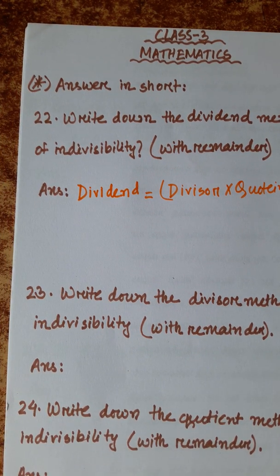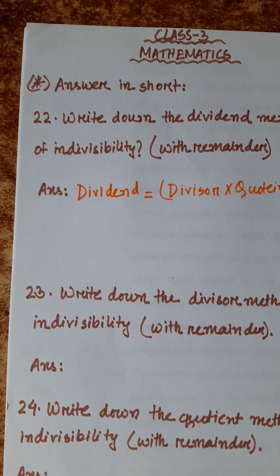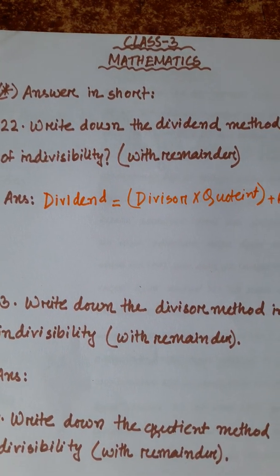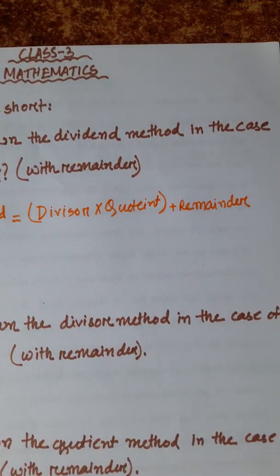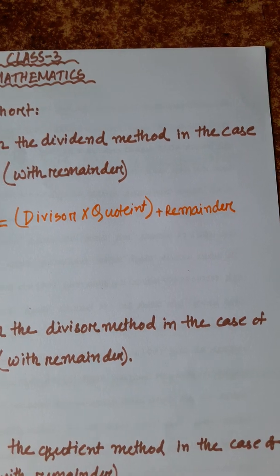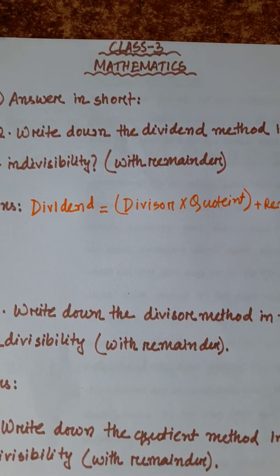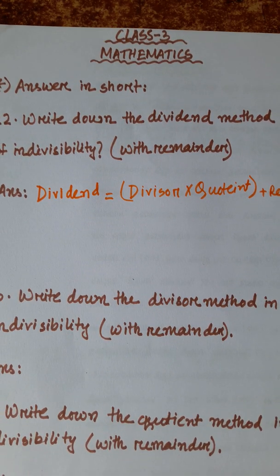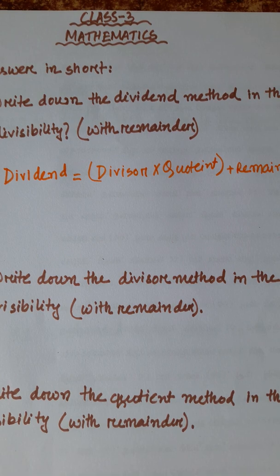Number 23: write down the divisor method in the case of indivisibility. We have to write down the divisor method in the case of indivisibility with remainder.